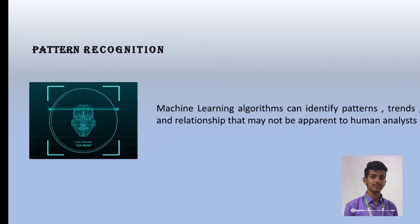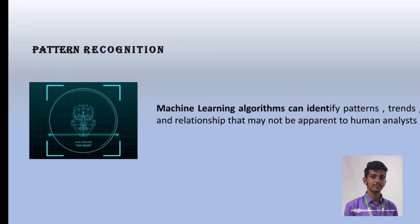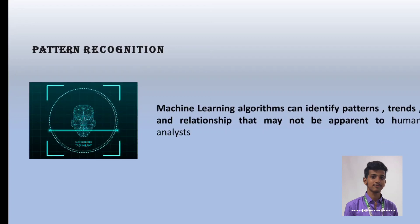Machine learning algorithms can identify patterns, trends, and relationships that may not be apparent to human analysts. Pattern recognition is the ability of a machine to identify patterns in data and use those patterns to make decisions or predictions using computer algorithms. It is a vital component of modern AI systems, for example, speech recognition and fingerprint identification.